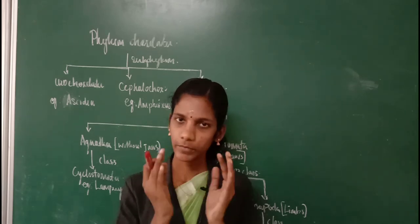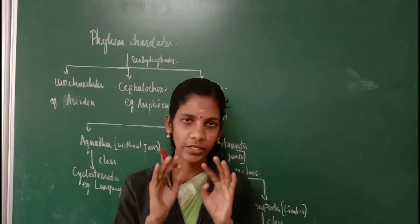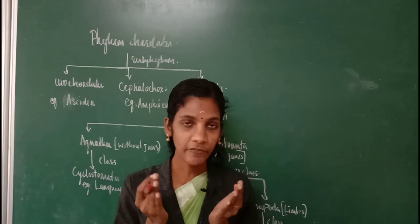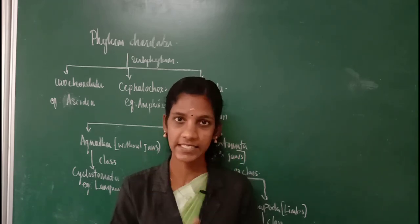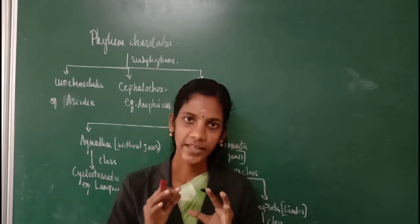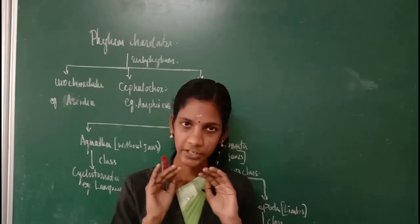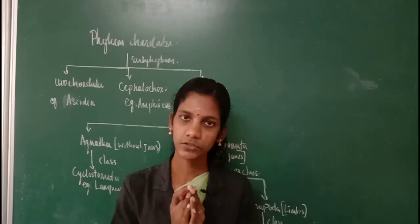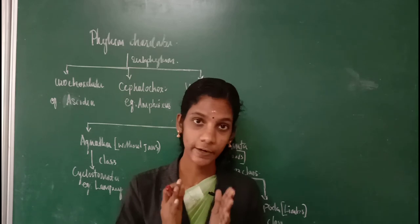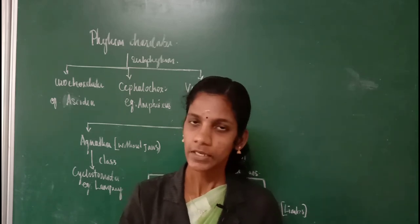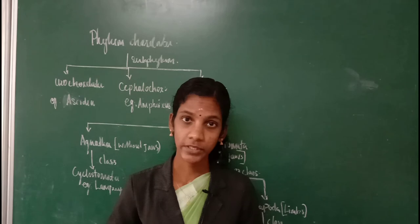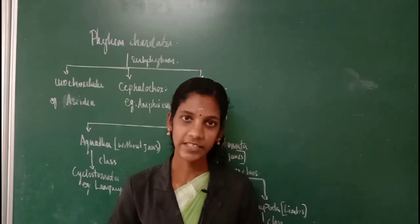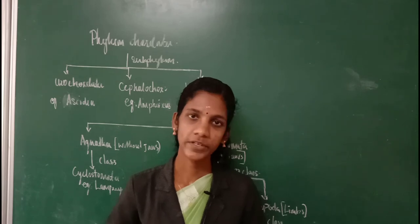The dermal scales can be of different types: cycloid scale, ctenoid scale, and placoid scale. In the case of Tetrapoda, they may have protective structures like feathers and hairs instead. In the case of fishes, they have a two-chambered heart, but in the case of Tetrapoda, they have more than two chambers — three or four-chambered heart.